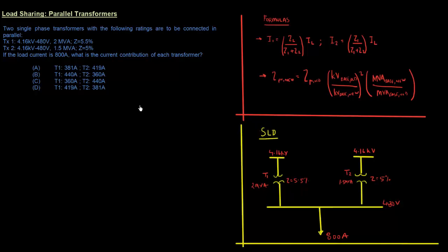Hello and welcome to another video in the Power PE series from Movingelectrons.com. Our topic for today is parallel transformers. We've been given two single-phase transformers with the following ratings to be connected in parallel. They have the same voltage ratio — 4.16 kV primary and 480 V secondary. One is a 2 MVA transformer with 5.5% impedance, the other is 1.5 MVA with 5% impedance. The load current is 800 amps. We need to find the current contribution of each transformer.